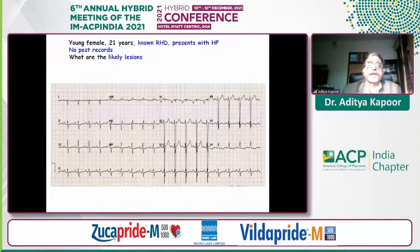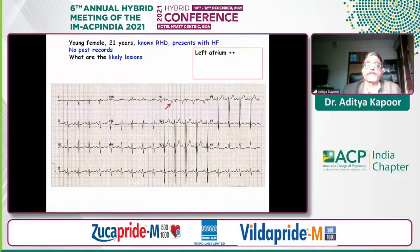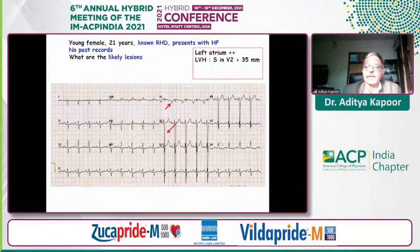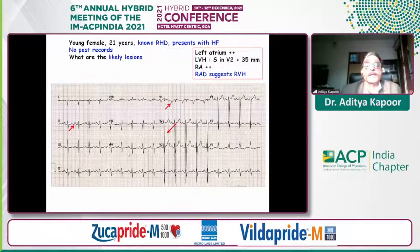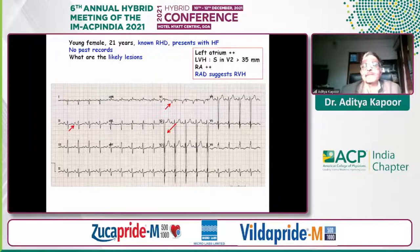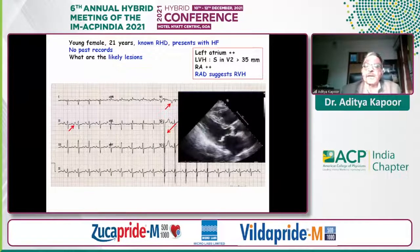Voltage changes: a young patient with rheumatic heart disease presents with heart failure. What are the likely lesions just from the ECG alone? There is left atrial enlargement, clearly left ventricular hypertrophy, and right axis deviation visible in leads I and AVF. This suggests that apart from mitral stenosis — for which she had a rumble — she also has aortic valve disease and significant pulmonary artery hypertension, confirmed on echo. Voltage changes and hypertrophy can tell us a lot about underlying etiology.